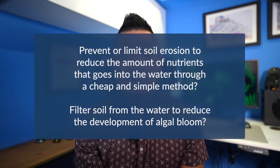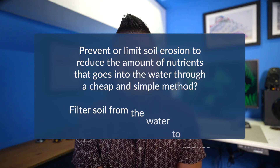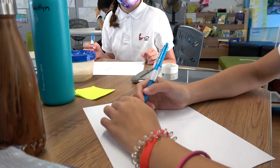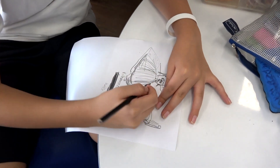Here are the problem statements students came up with as a class: how might we prevent or limit soil erosion to reduce the amount of nutrients that goes into the water through a cheap method, and how might we filter soil from the water to reduce the development of algal bloom? The majority of students had a problem statement similar to the first one, since the nutrients are in the soil and they wanted to prevent it from entering the water. Students then brainstormed different ways of answering their problem statement using divergent thinking — generating a large quantity of ideas, encouraging creativity, with no judgment, just putting all their ideas onto paper.